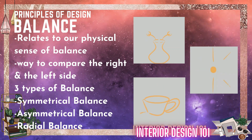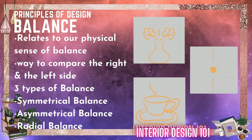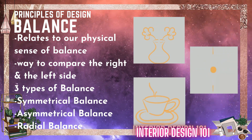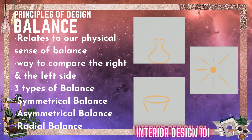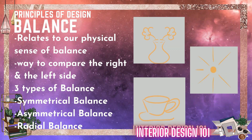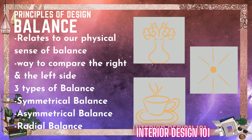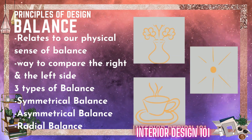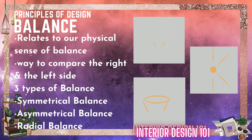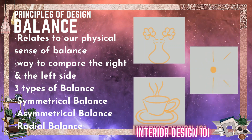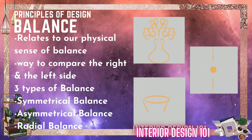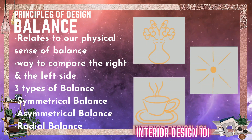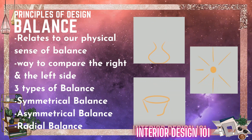The major forms of balance are: Symmetrical balance, where when the object is cut in half, both sides are equal. Asymmetrical balance, where both sides are different. Whereas radial balance is arranging objects equally around a central point.